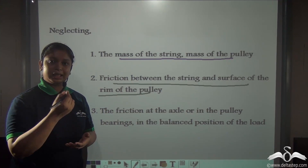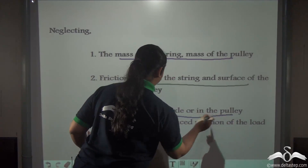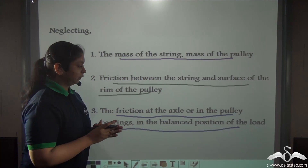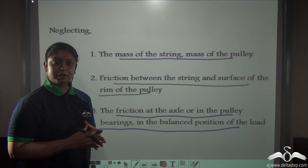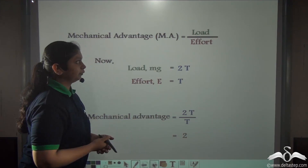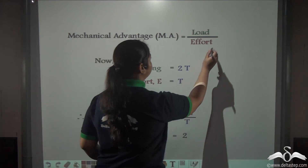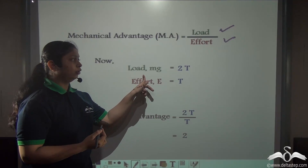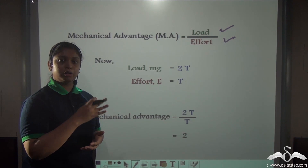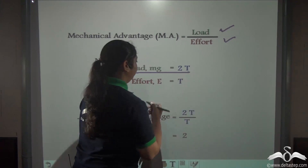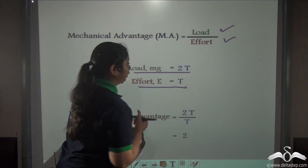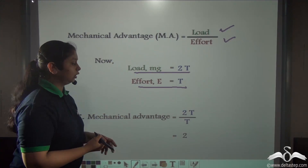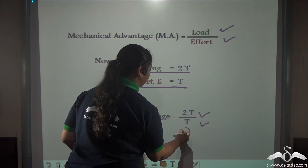The string does not experience any friction when it moves about the rim of the pulley. Third, friction at the axle or pulley bearings is also negligible — it does not affect the system when a load is being lifted. Mechanical advantage is load divided by effort. Load equals 2t and effort equals t, so mechanical advantage equals 2t / t, which is equal to 2.